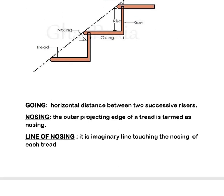The next component part is nosing. Nosing is the outer projecting edge of a thread. The next term is line of nosing, which is an imaginary line touching the nosing at each thread.